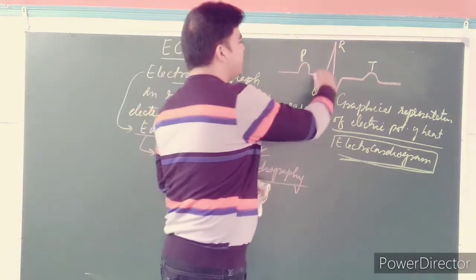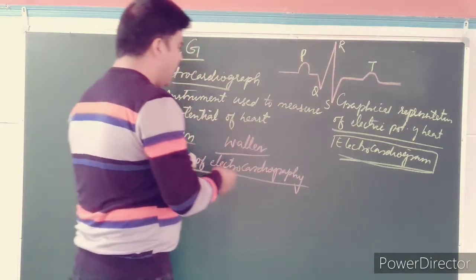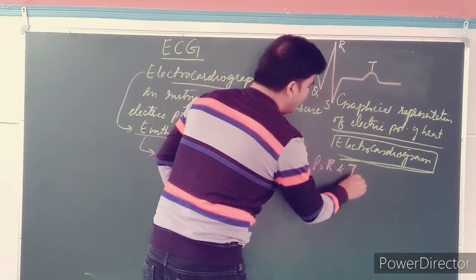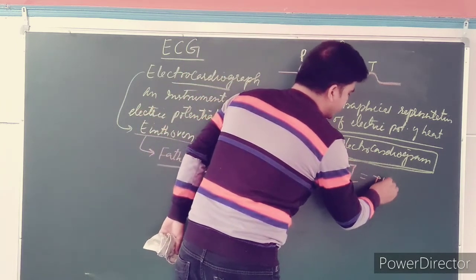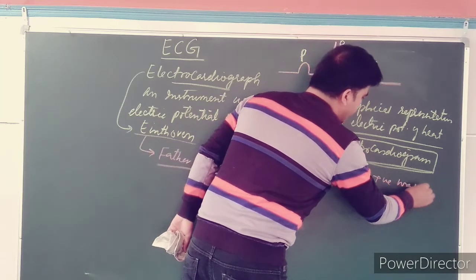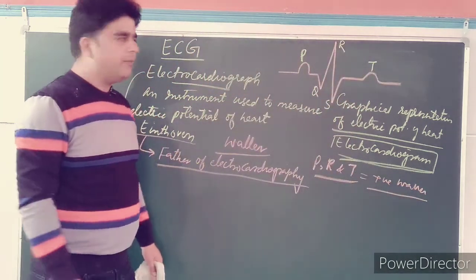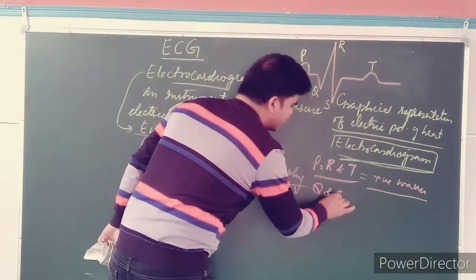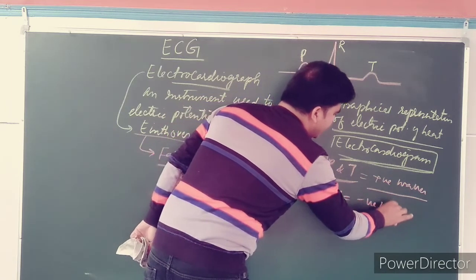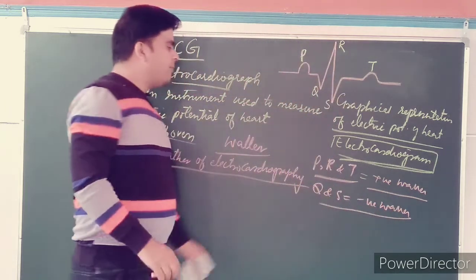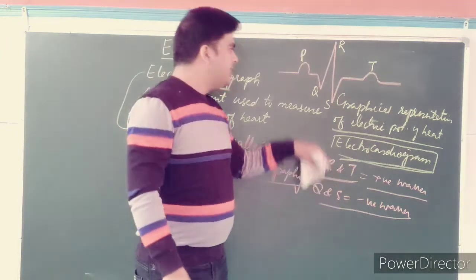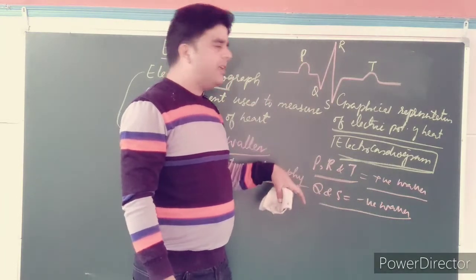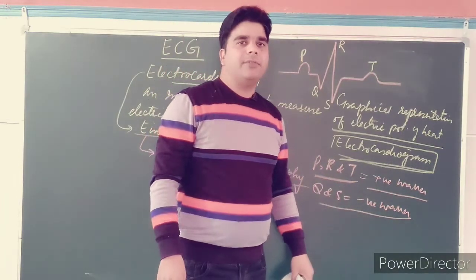P, R, and T waves are above the baseline, so we call them positive waves. Q and S waves are below the baseline, so they are called negative waves. P, R, and T are positive waves, while Q and S are negative waves.